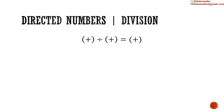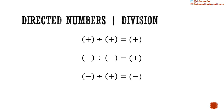Similarly, the rules of division of directed numbers: a positive divided by a positive is equal to a positive. A negative divided by a negative is equal to a positive. A negative divided by a positive is equal to a negative. And a positive divided by a negative is equal to a negative.